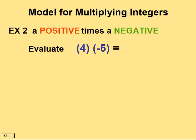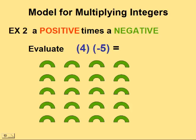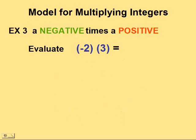In our next example, we'll multiply a positive times a negative integer: positive four times negative five. The positive four means we will bring in four groups of negative fives. We will have four columns of five frowns. If we add up all the frowns, we would have negative 20 — so positive four times negative five equals negative 20.